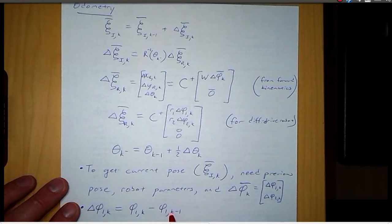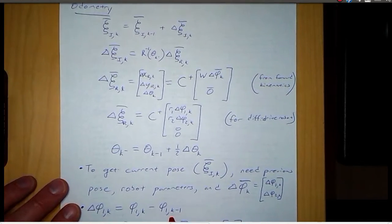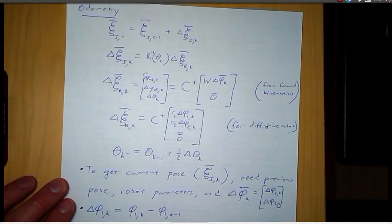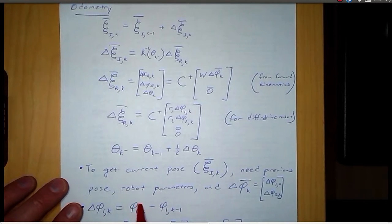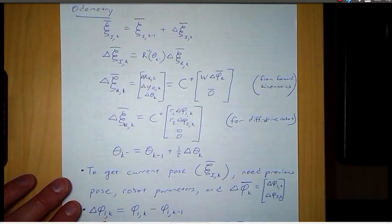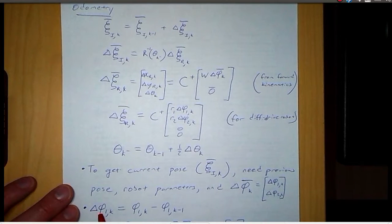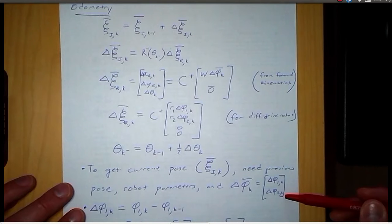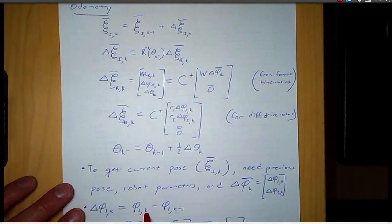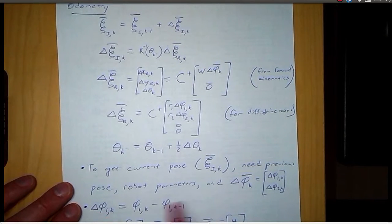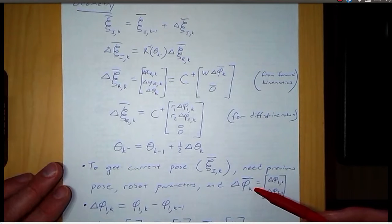Since we started watching it at the previous time, phi 1 at k minus 1 is how far it had gone at the previous measurement. Delta phi k is how far the wheel turned between the previous measurement and the current measurement. So delta phi 1 at k is how far wheel 1 has turned from the previous time to the current time. This vector delta phi of k is made up of delta phi 1 of k and delta phi 2 of k. We need to be either given the angles for the wheels at the previous time and the current time, or maybe we're just given the delta phi directly.